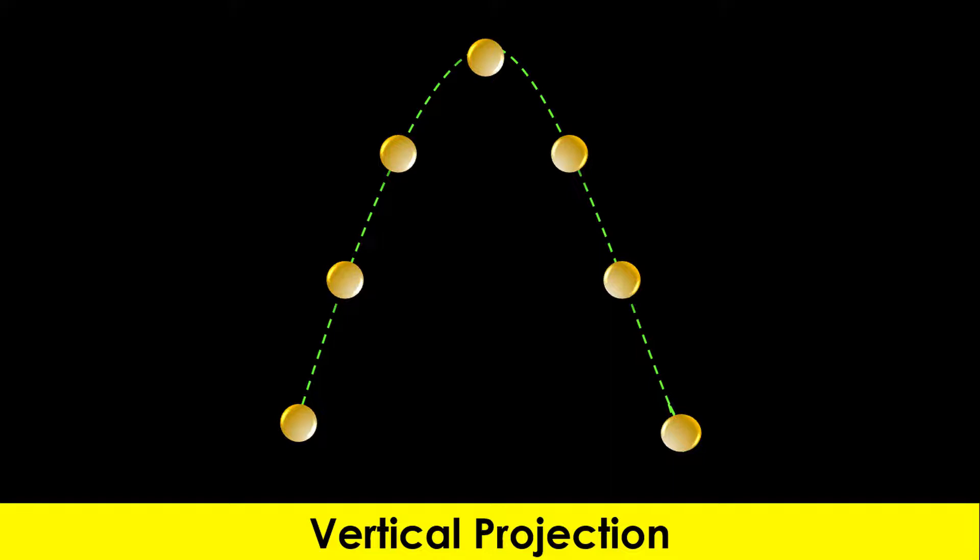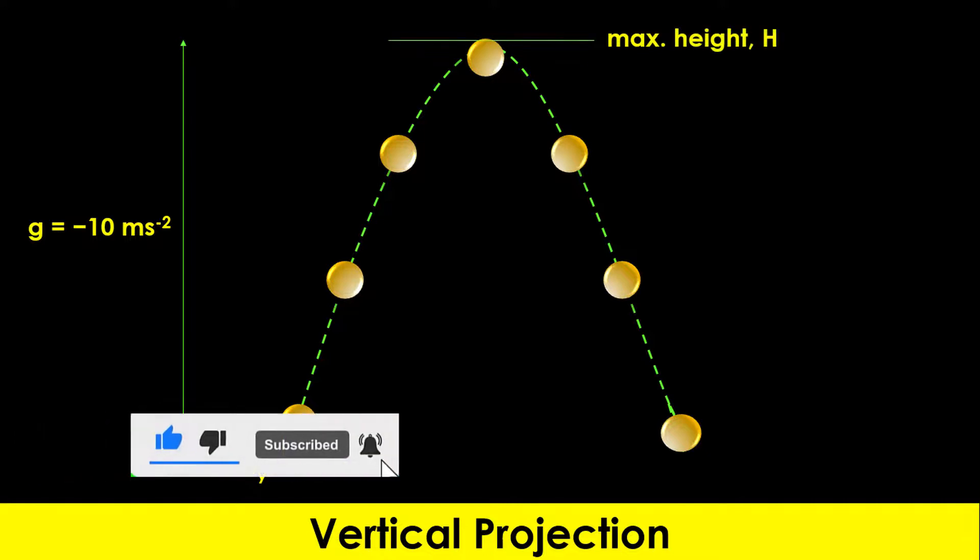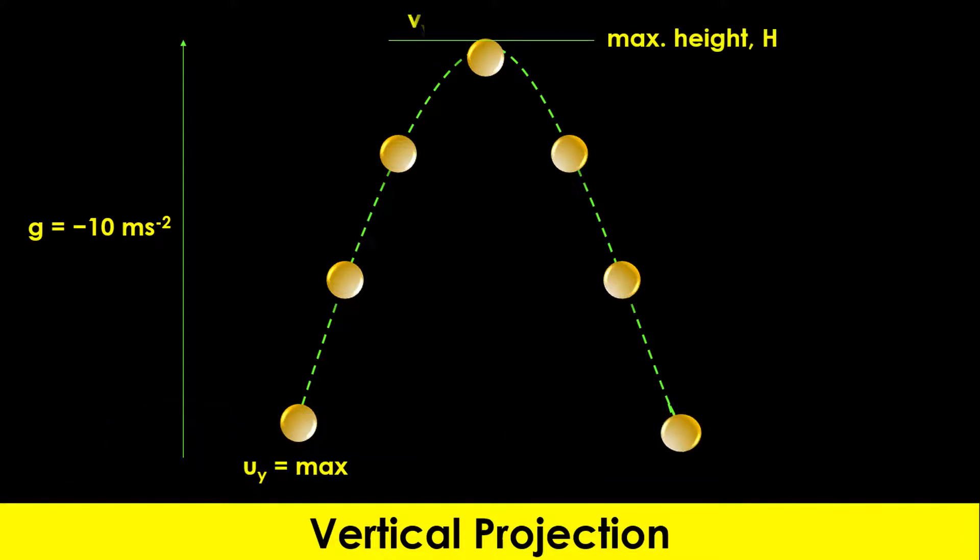When the body is thrown upwards, it leaves with its maximum initial velocity. As it goes upwards, it moves against the force of gravity, so its velocity decreases at a steady rate of about 10 meters per second until it gets to its highest height, H, where its final velocity becomes zero. At this point,